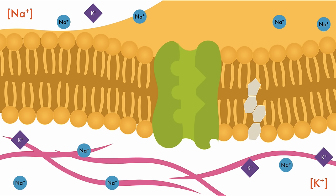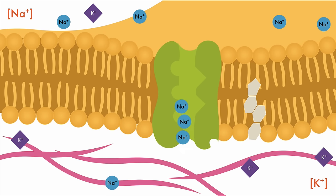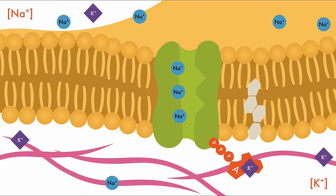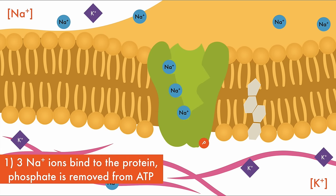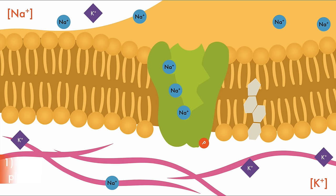Let's see how this works. First, three sodium ions from the cytosol bind to the protein, and a phosphate group from ATP breaks off into the carrier protein. This provides energy for the shape of the protein to change, and the sodium ions can be released into the outside of the cell.